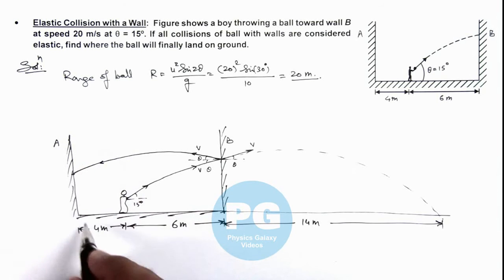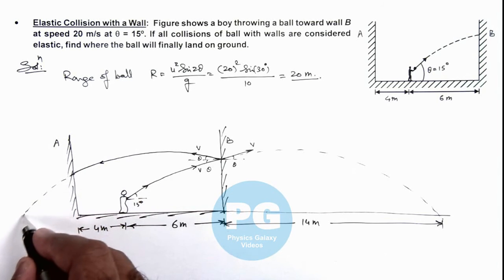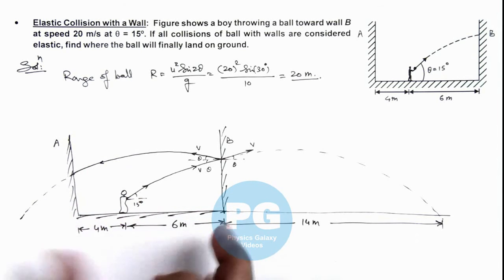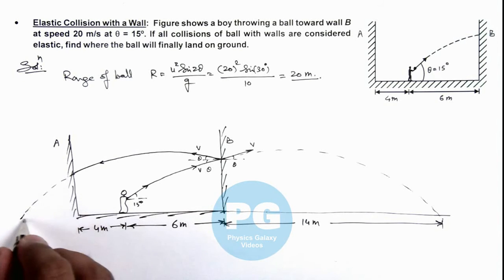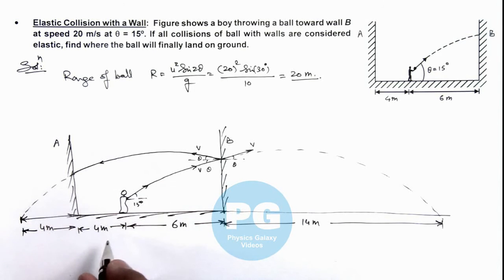And if this wall is not there, the projectile would have fallen somewhere on ground which is at a distance 14 meters from this wall. That means it will strike at a distance 4 meters behind wall A. So this distance would have been 4 meters if wall A would not have been present.